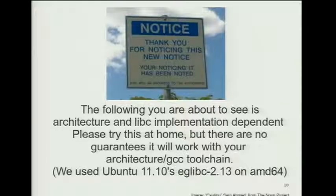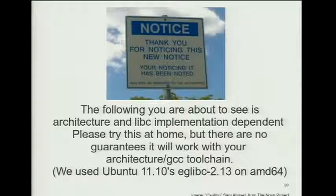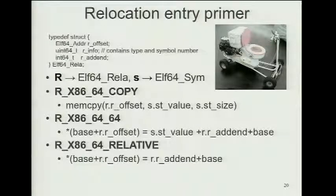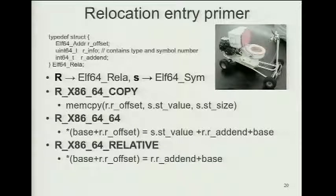That ends the general part of ELF. The weird machine I found is specific to the AMD64 architecture and glibc 2.13 with the GCC toolchain. I believe it would work in others, but this is where I worked — if anyone wants to try at home with a different toolchain and architecture, I'd be really interested to see what patches are needed. These are the relocation entry types used for AMD64 — specifically the three used for the metadata weird machine: copy, 64, and relative.